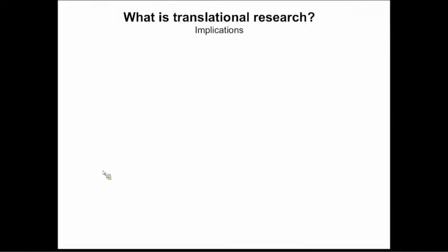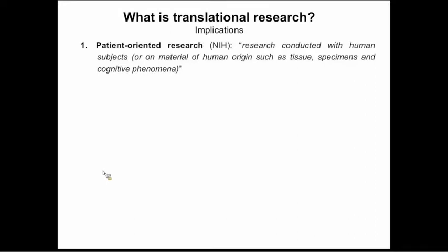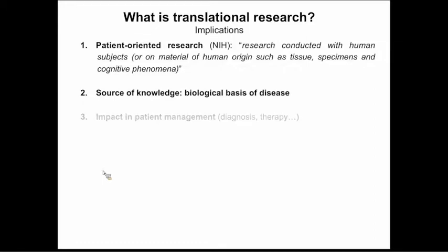So what are the implications of translational research? First and foremost, highlighted by the NIH, it is patient-oriented research — research conducted with human subjects, underscoring materials such as tissue and specimens. We use tissue or blood samples from humans to understand what's going on. The source of knowledge is the biological basis of the disease; we need to understand what's happening so we can develop tools, diagnostics, and prediction biomarkers to improve clinical outcomes.